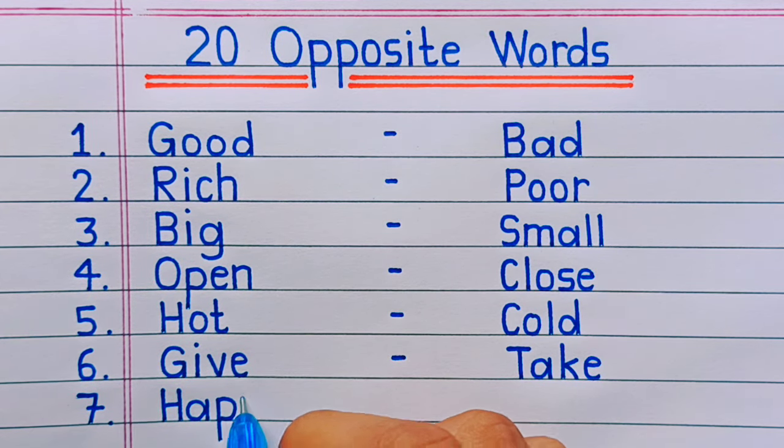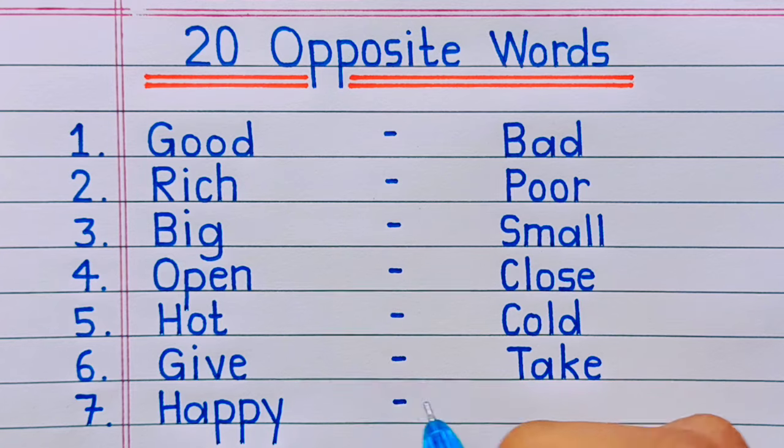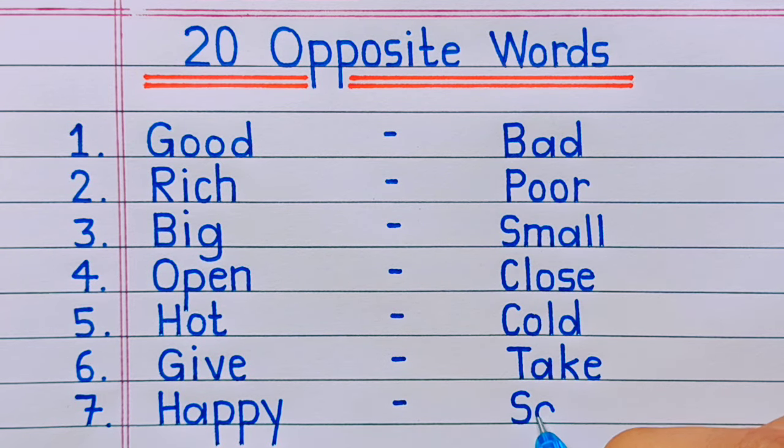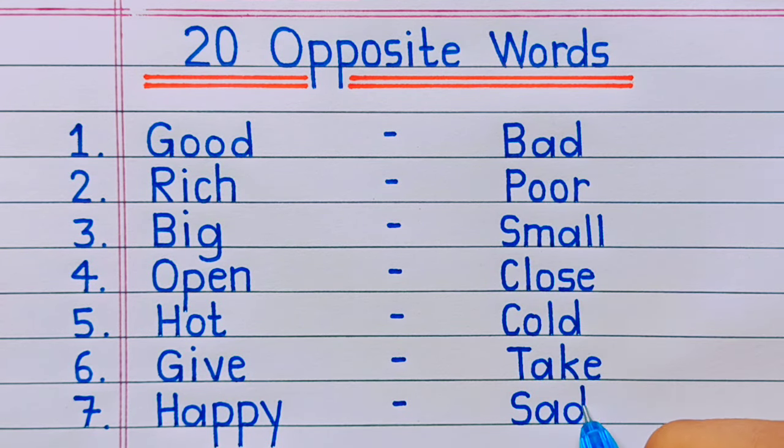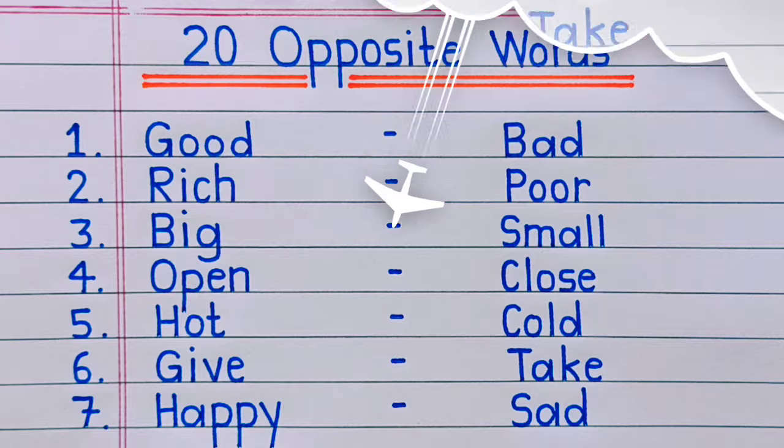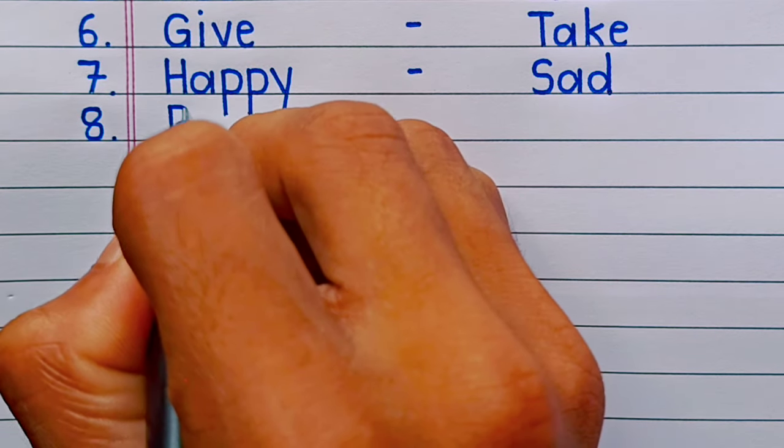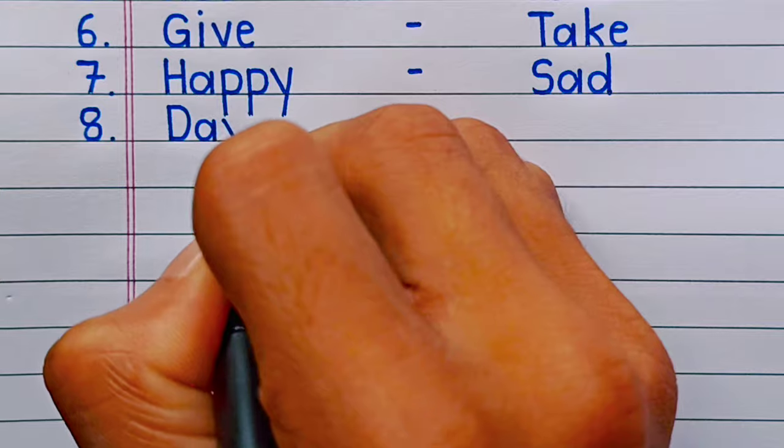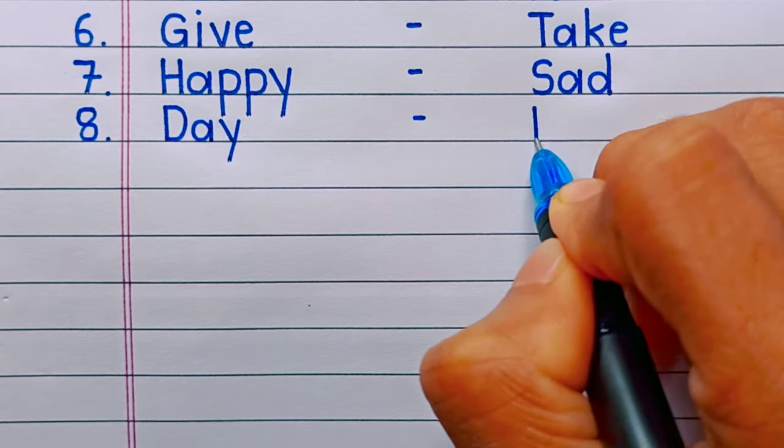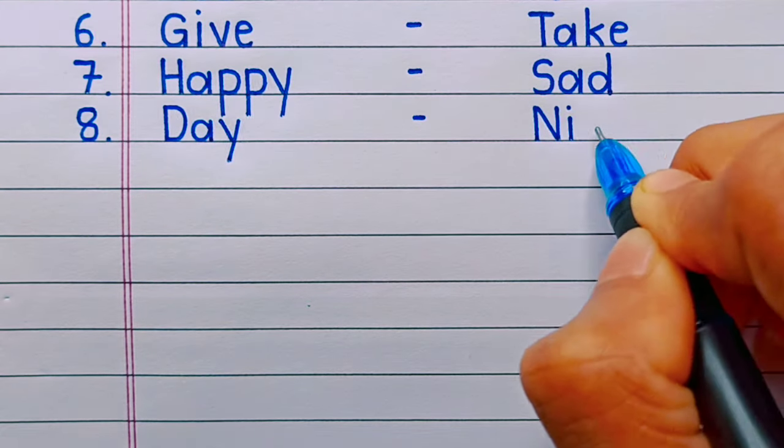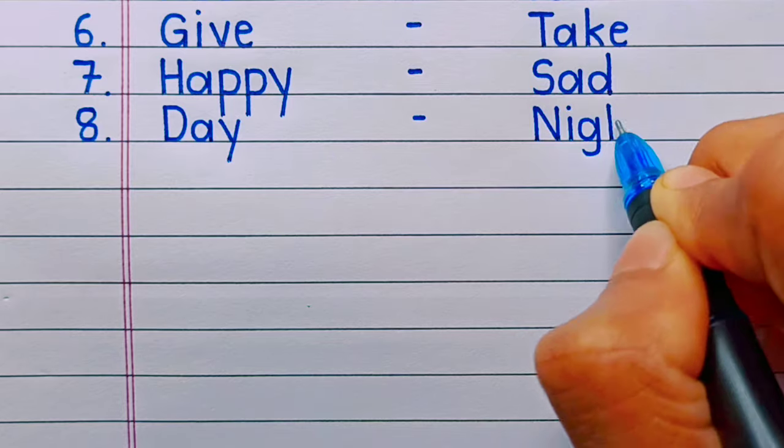Number seven: happy, sad. Number eight: day, night.